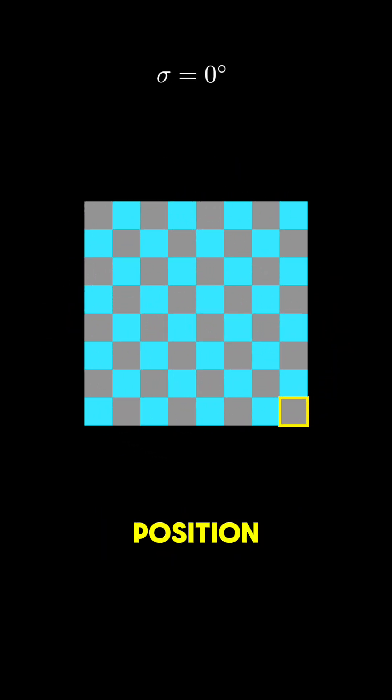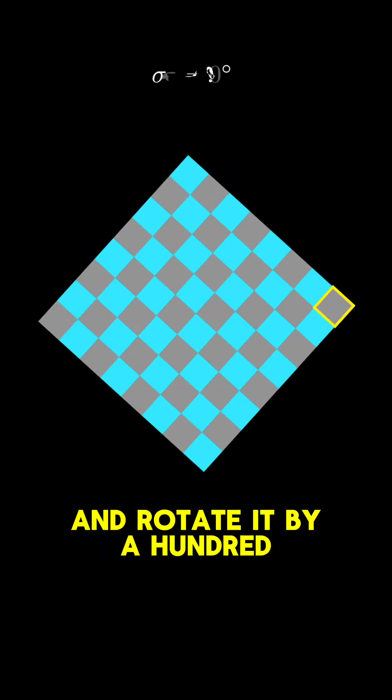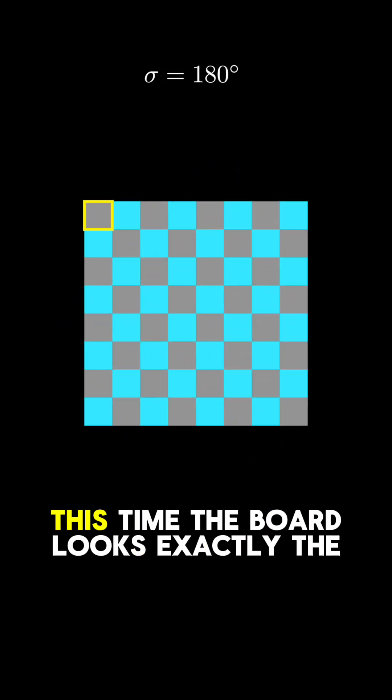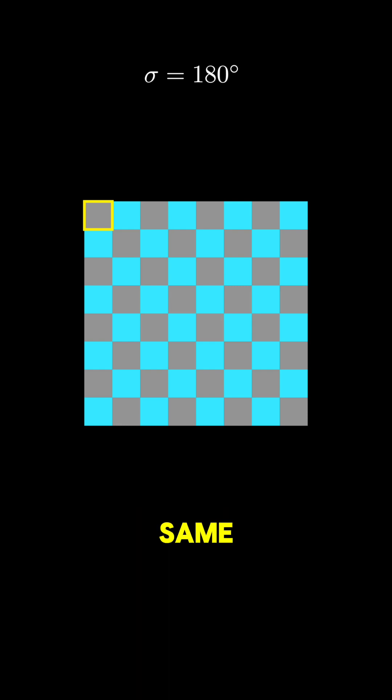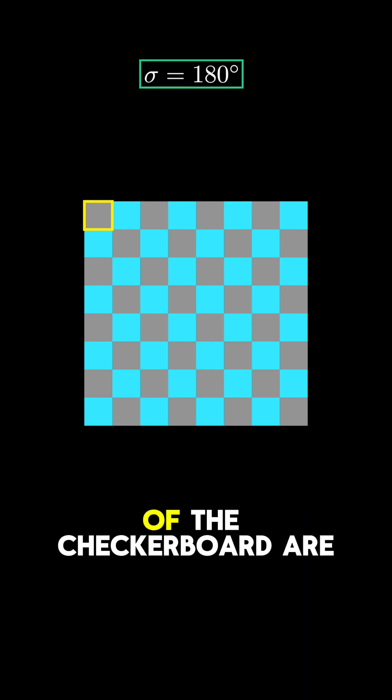Now go back to the original position, and rotate it by 180 degrees instead. This time, the board looks exactly the same, so we can say that a 180 degree rotation is a symmetry of the checkerboard.